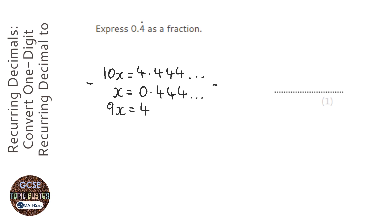And then if we solve this, so let's put our lines going down, if we divide both sides by 9, we get x equals 4 over 9. Now we defined x as the recurring sequence, so the recurring sequence is 4 over 9.